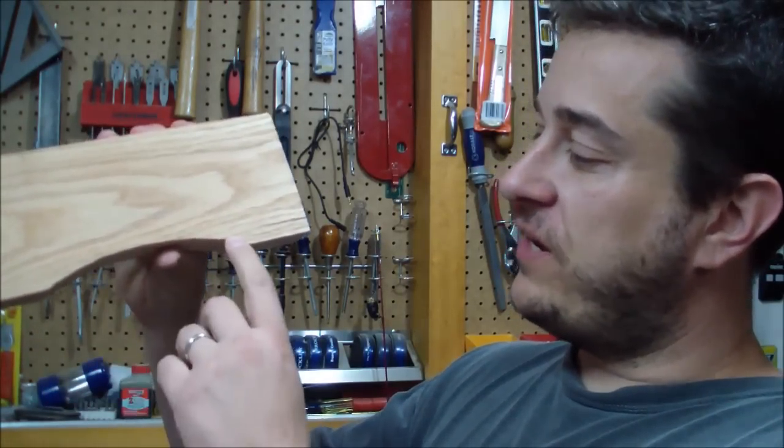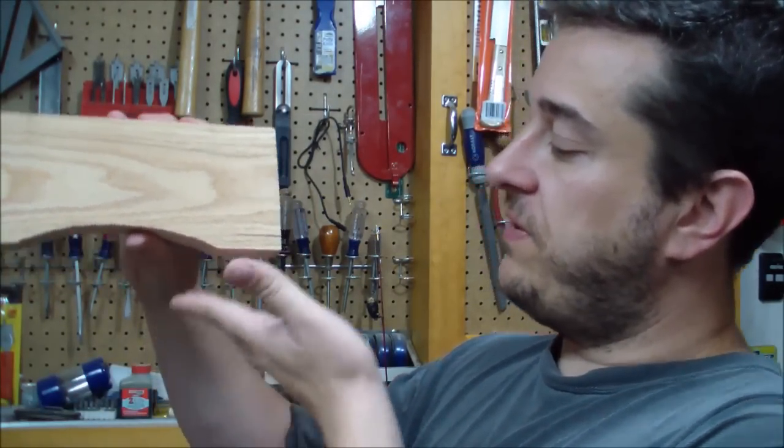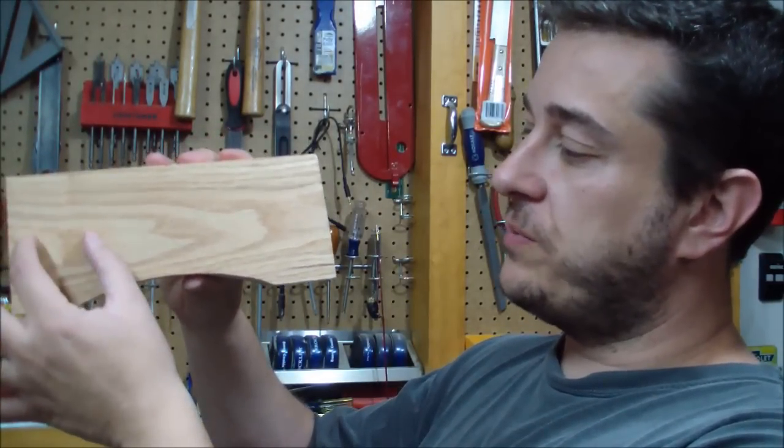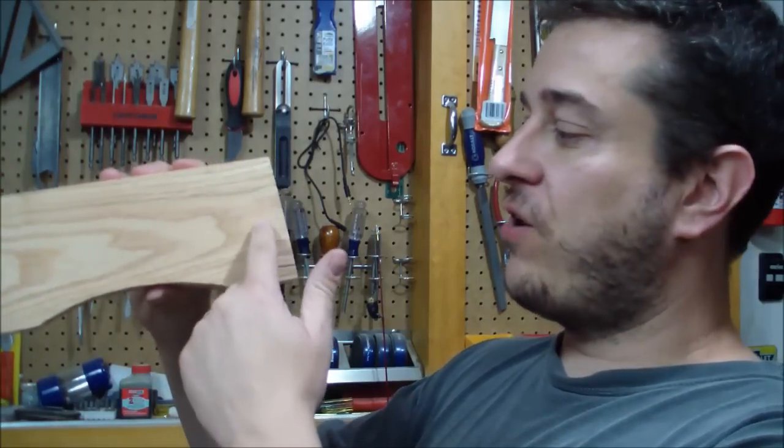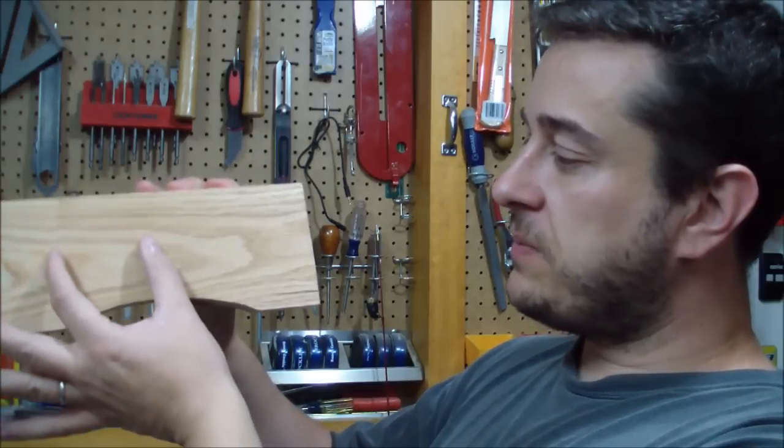So I've got the arc now on my weather station the way I want it, and I've got the feet that are set up against it. Now I've just got to drill the holes where the actual instruments are going to go. There'll be a thermometer, a barometer, and a hygrometer. I'm gonna come down about one and three-quarters inch and then space them three inches apart.